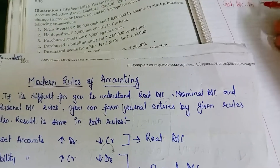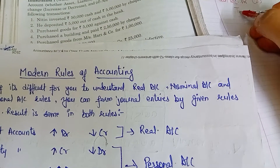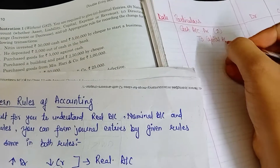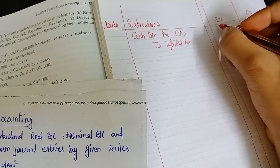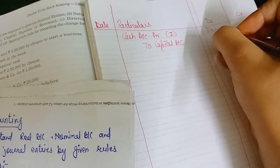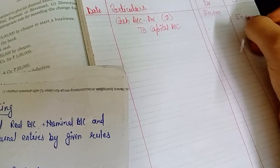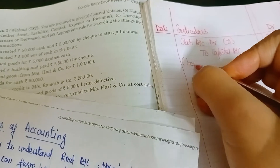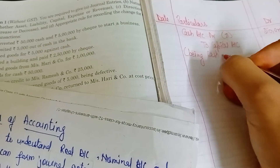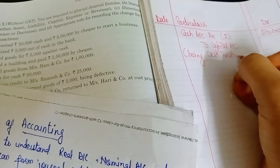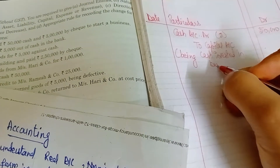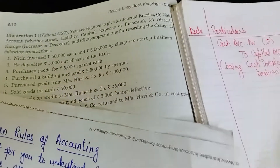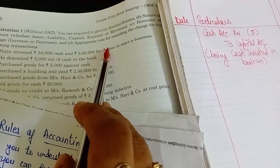Cash has increased and cash is an asset — when our asset increases, we debit it. Capital has also increased, so we credit Capital Account. The amount increased is 50,000, so we write 50,000. In journal entries we should also write the narration: 'Being cash invested in business.'